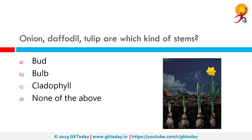Onion, Daffodil, and Tulip are which kind of stems? The correct answer is bulb. In botany, a bulb is structurally a short stem with fleshy leaves or leaf bases that function as food storage organs during dormancy.